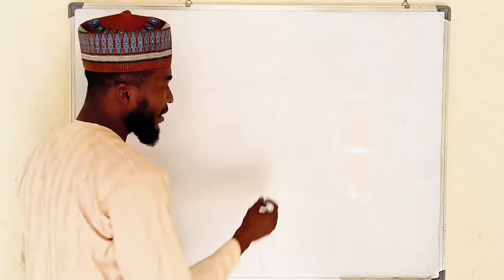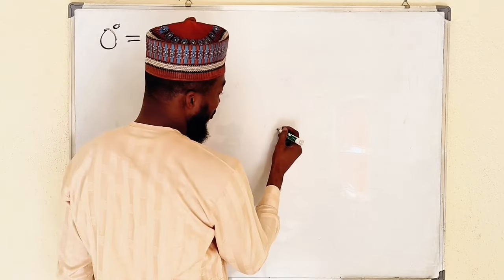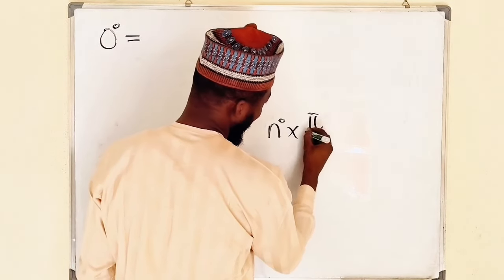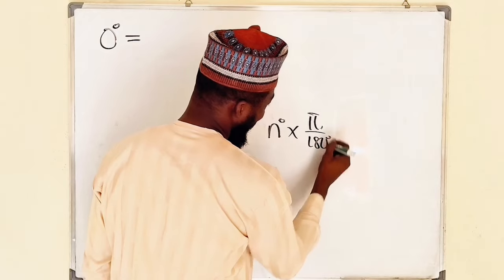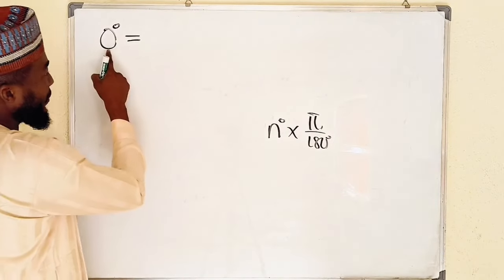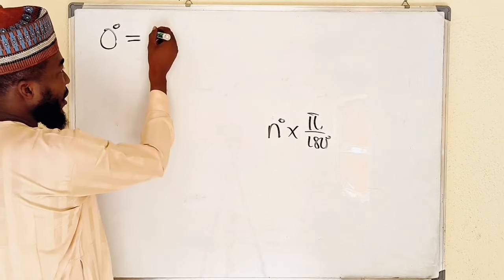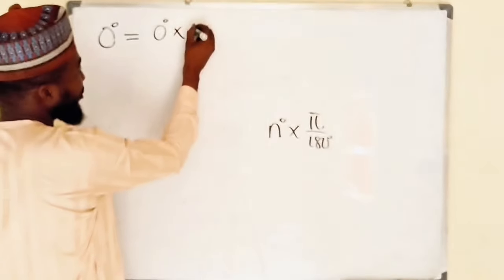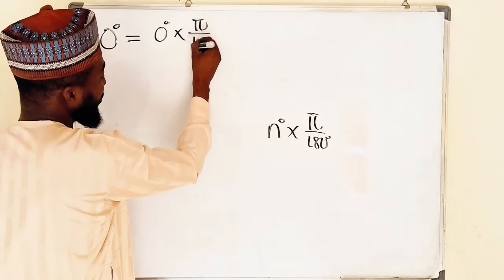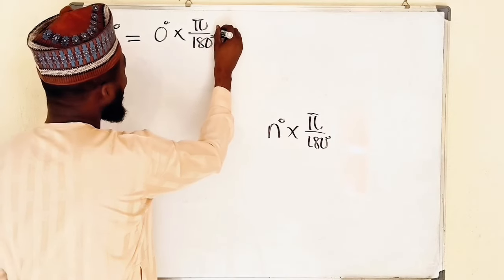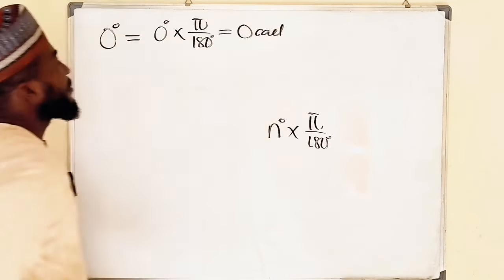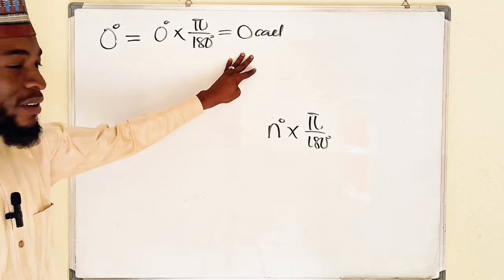What is the conversion scale? You should always multiply any degree value by π divided by 180 degrees — this is the scale factor. Since we are given zero degrees, you have zero degrees times π over 180 degrees, and everything here will be zero. So zero degrees equals zero radians.